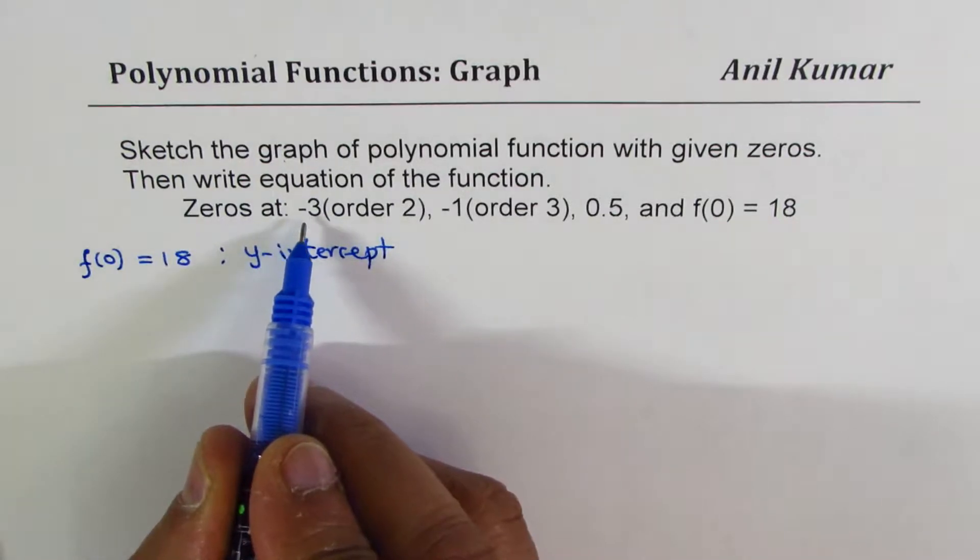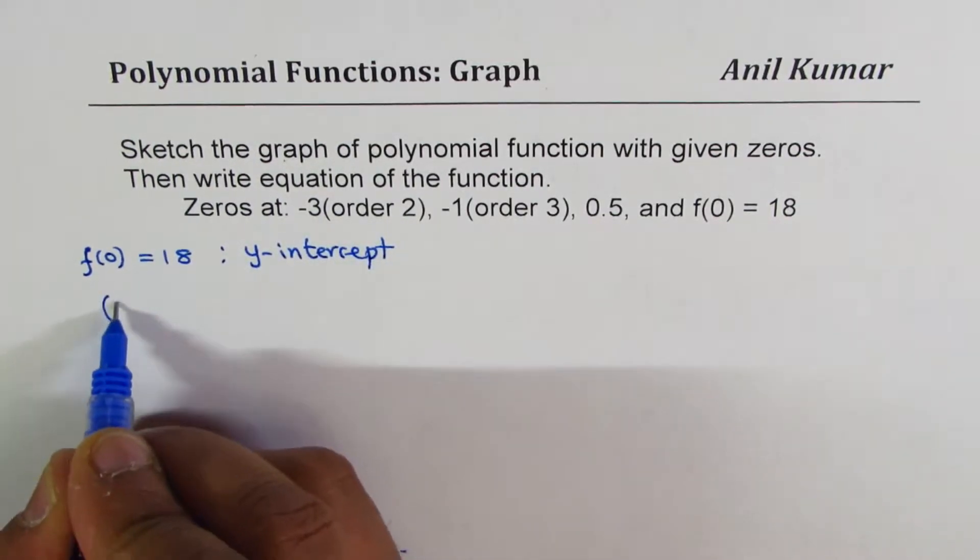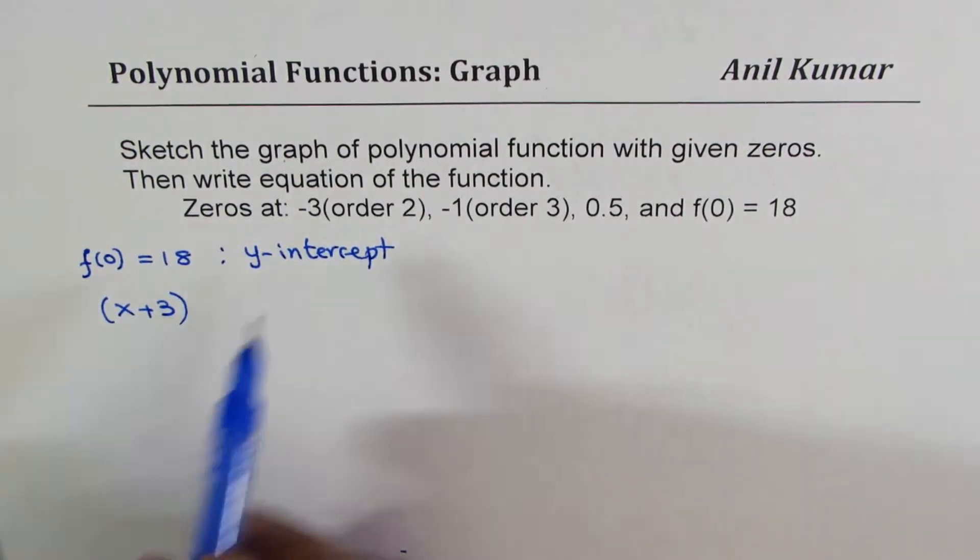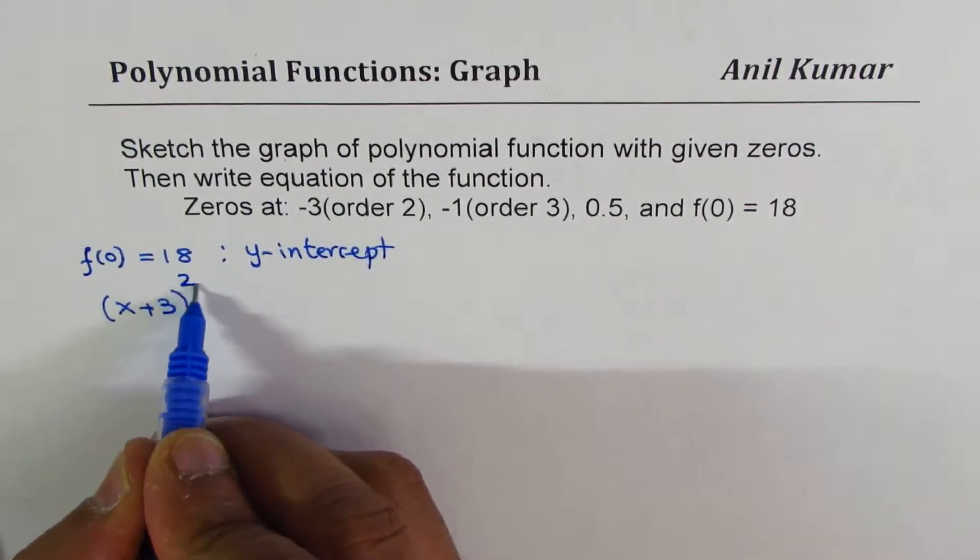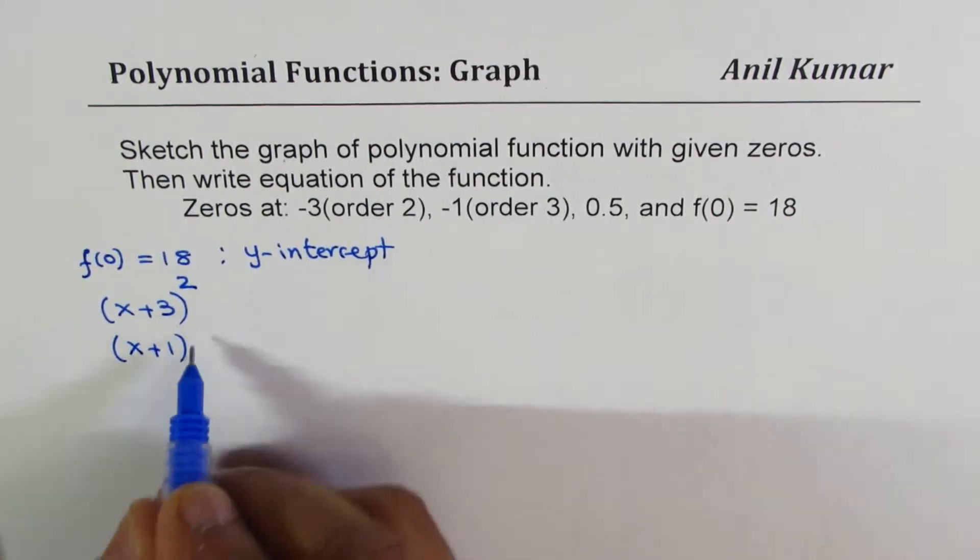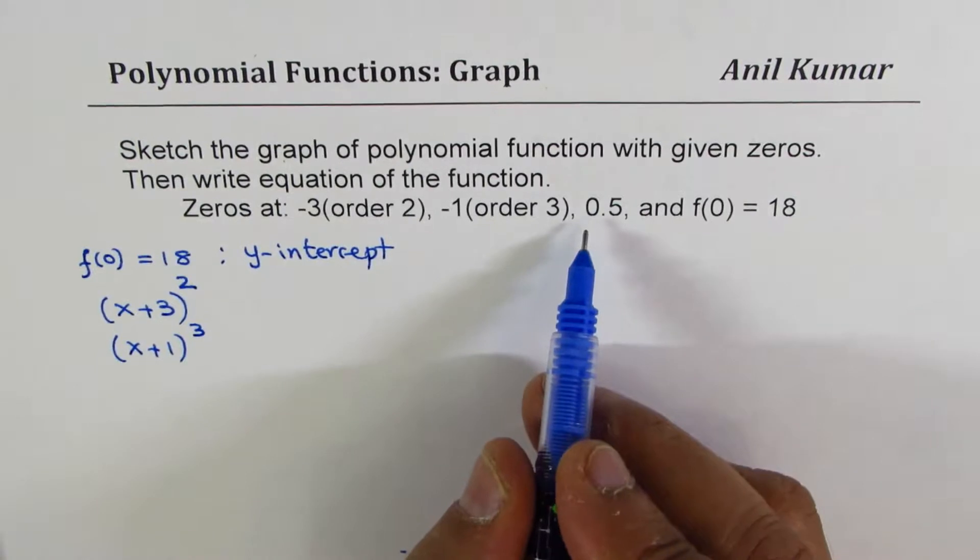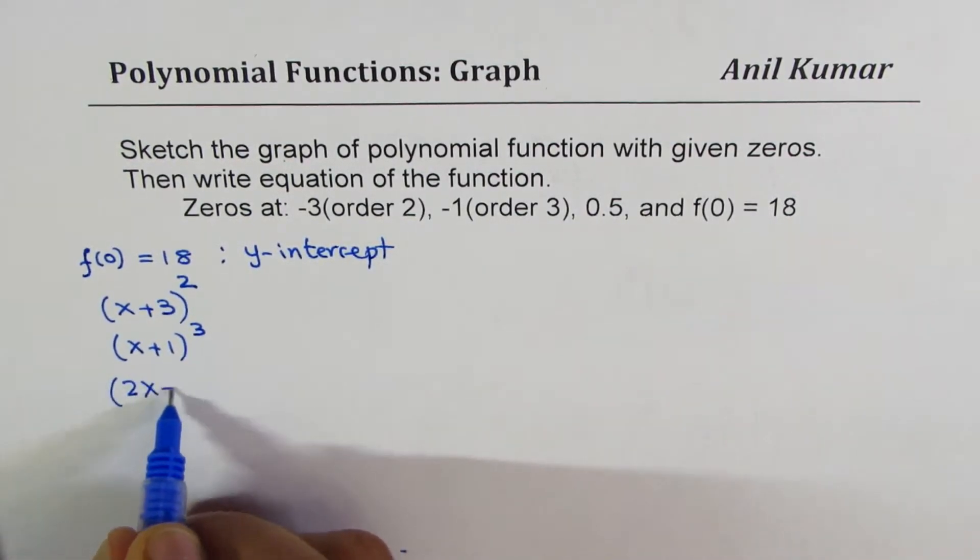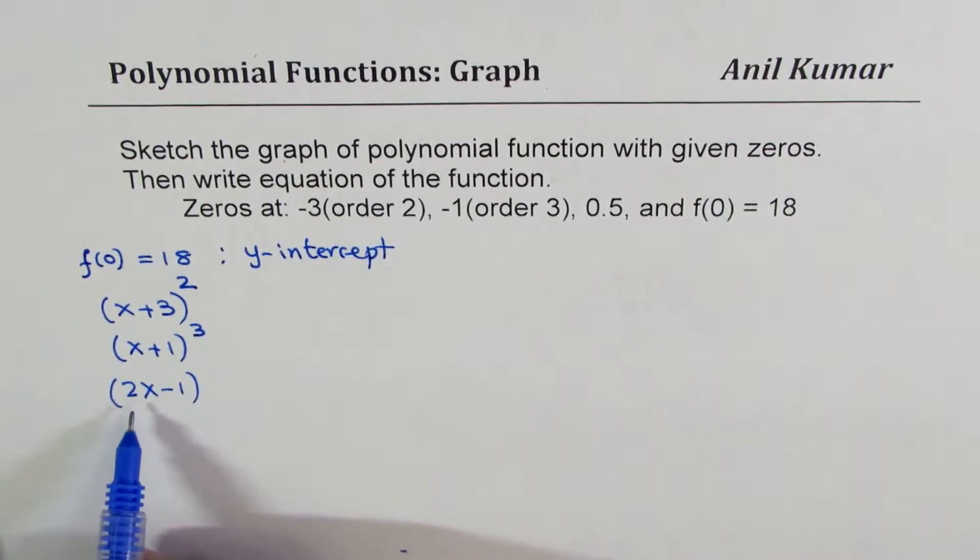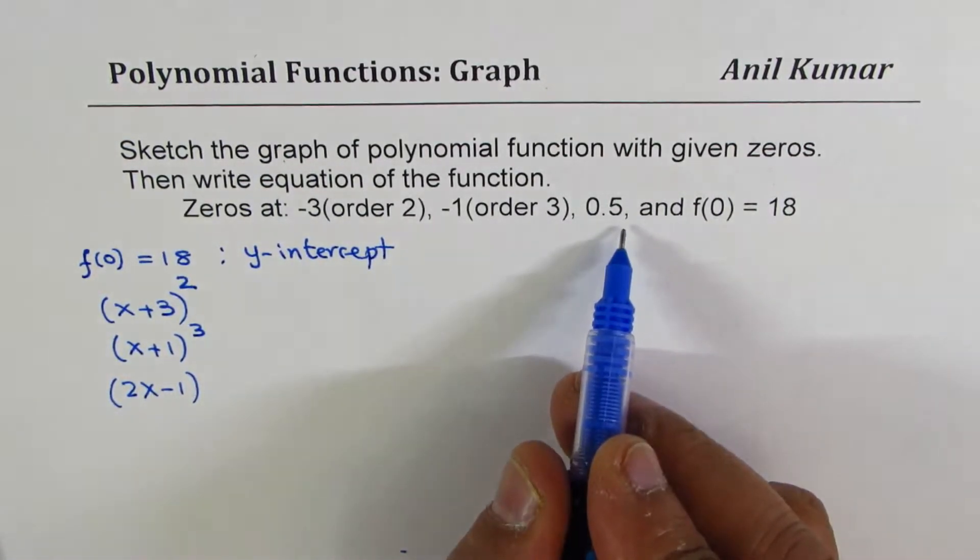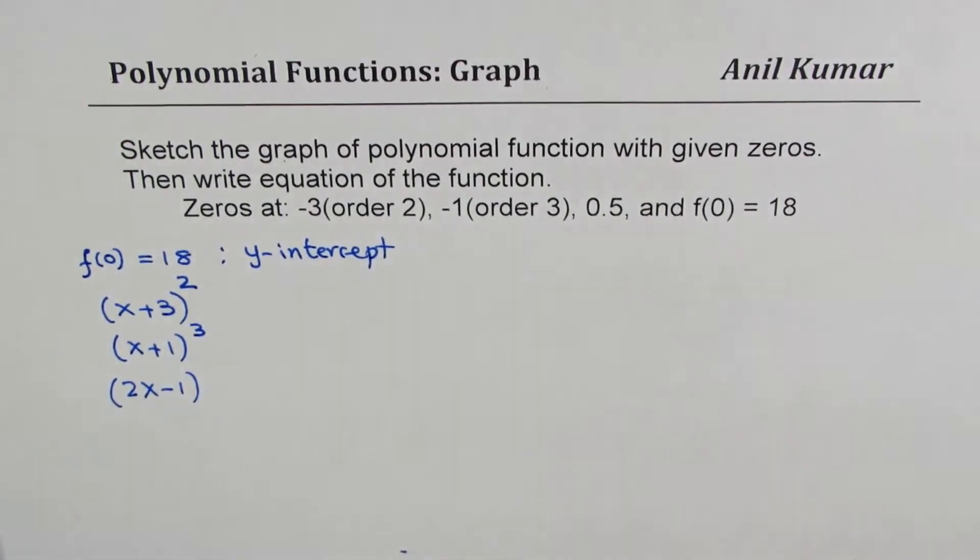Then these zeros. When I say zero at minus 3 order 2, it really means that the factor is x plus 3. That will give you zero at minus 3. Order 2 means square it. Zero at minus 1 means x plus 1. Order 3 means cube it. Zero at 0.5 or half means the factor is 2x minus 1. This is going to be zero at 0.5. It's a linear zero since nothing is mentioned here.